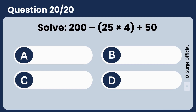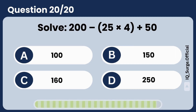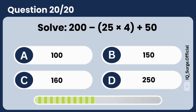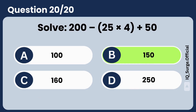Solve: 200 divided by (25 times 4) plus 50. Answer: 150. Great work.